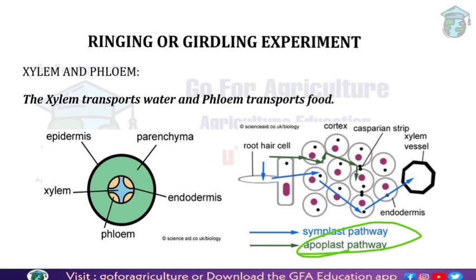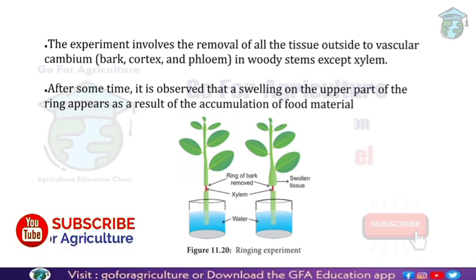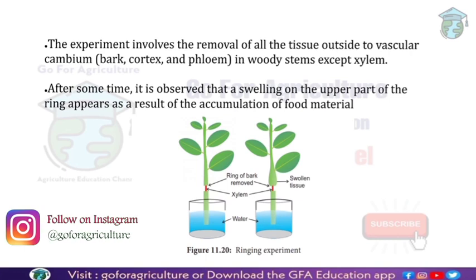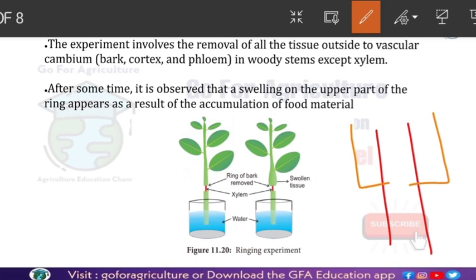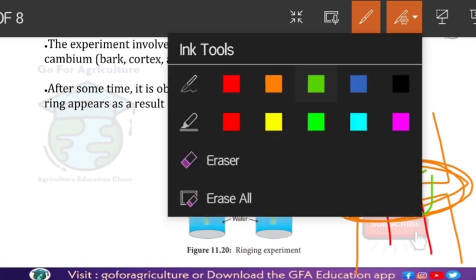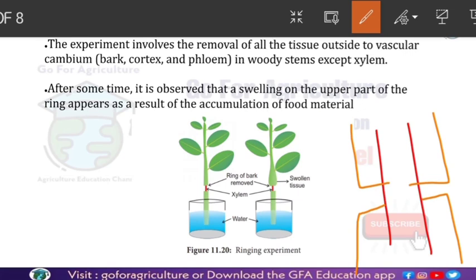Now for the experiment. The first step is removal of vascular cambium — meaning removal of bark, cortex, and phloem — but we keep the xylem as usual. We remove only the phloem because this experiment's main theme is to find out what happens if we remove the phloem. You can see in the picture that in the ringed area there is no phloem, while the xylem remains intact.